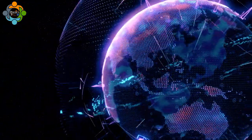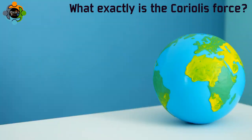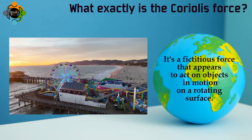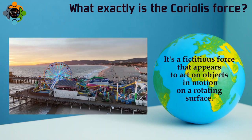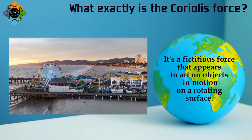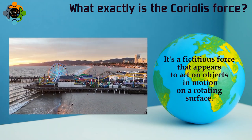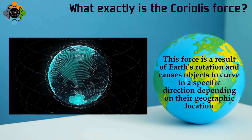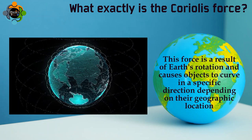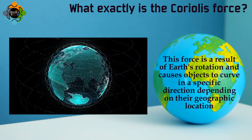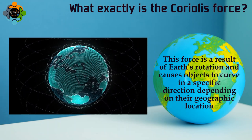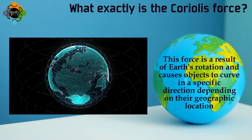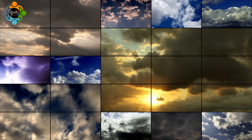So what exactly is the Coriolis force? In simple terms, it's a fictitious force that appears to act on objects in motion on a rotating surface. This force is a result of Earth's rotation and causes objects to curve in a specific direction depending on their geographic location.